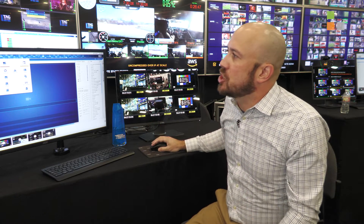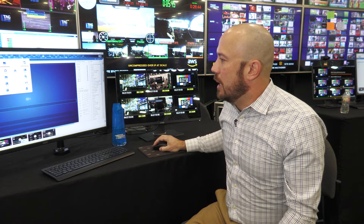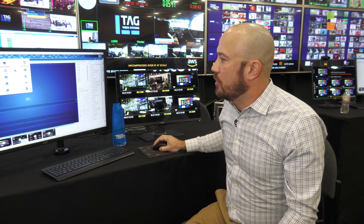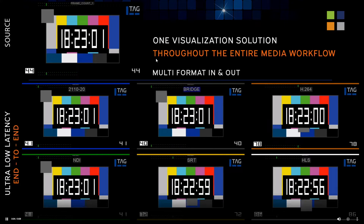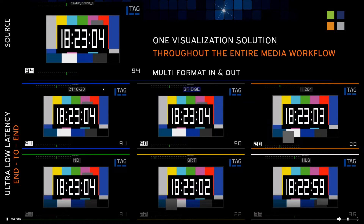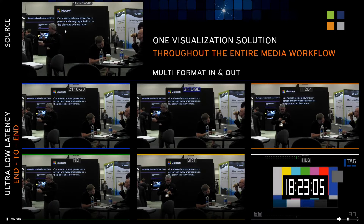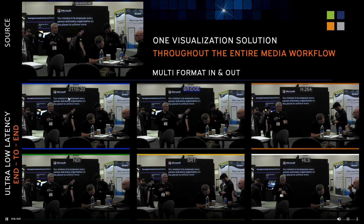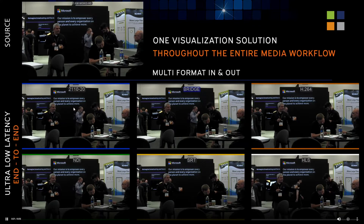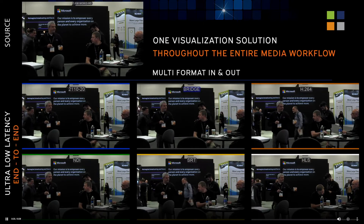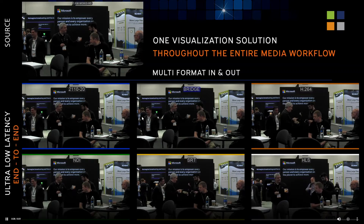We also have a new uncompressed bridge capability, which provides very low latency. We have a set of input servers and output servers that are now separated, so it doesn't have to happen all on one server. On the left you have your source formats — this is 2110 on the top left — processed as 2110 on that source server, and then bridged over in less than a frame of latency from your input servers to your output server. Those are some of the things we are looking forward to sharing more with our customers and clients.